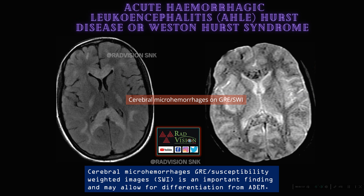Next, here you can see diffuse hyperintensity in the corpus callosum, basal ganglia, and cerebral hemispheres. On GRE, multiple punctate hemorrhages are visible. This is a classical case of acute hemorrhagic leukoencephalitis, also called Hurst disease or Weston-Hurst syndrome. GRE or SWI helps in differentiating these cases from ADEM.